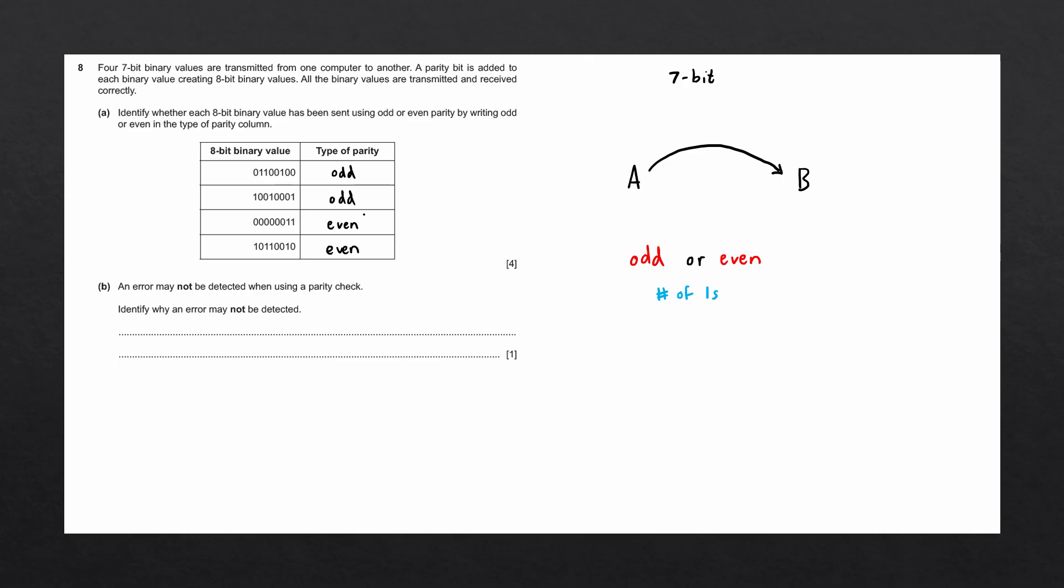For example, what if two of the bits has flipped places? Let's say we had the binary number 0 1 1 0 0 1 0 0. We then transmitted this from A over to B. Imagine now that the first two bits flipped, so we have 1 0 1 0 0 1 0 0. These are two completely different binary numbers, but they both have an odd number of ones. The receiver B would mark this as a correct binary number, even though the byte is incorrect.